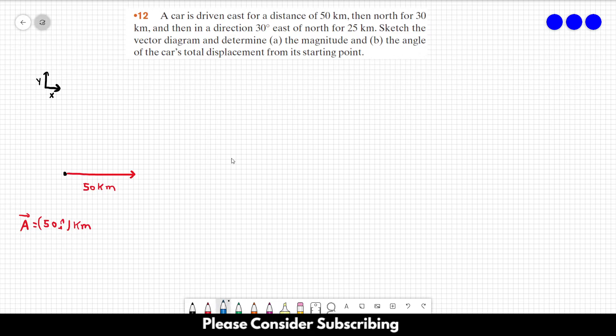And the second movement is 30 kilometers to the north. So it should be something like this. This is 30 kilometers. Let's call it vector B, which is equal to 30 in the j direction kilometers.